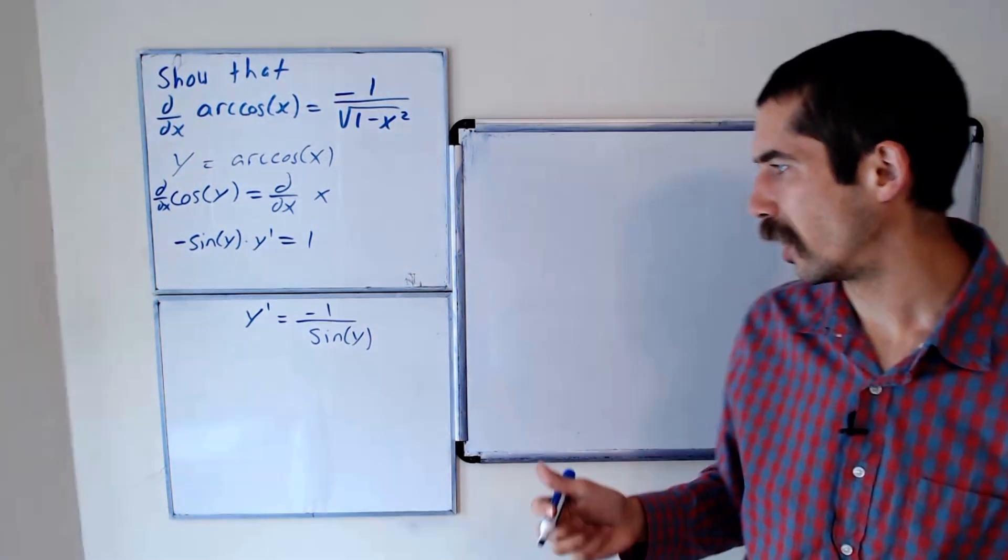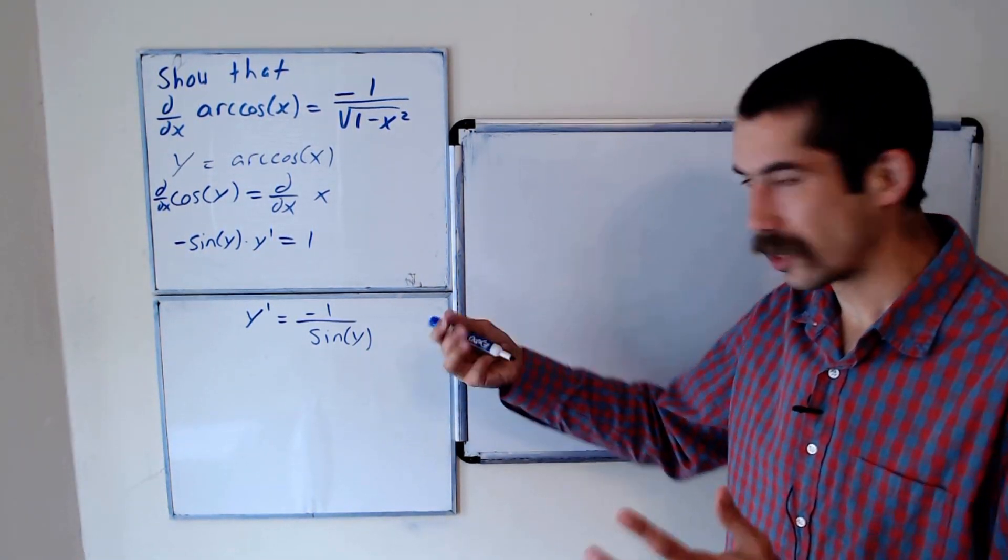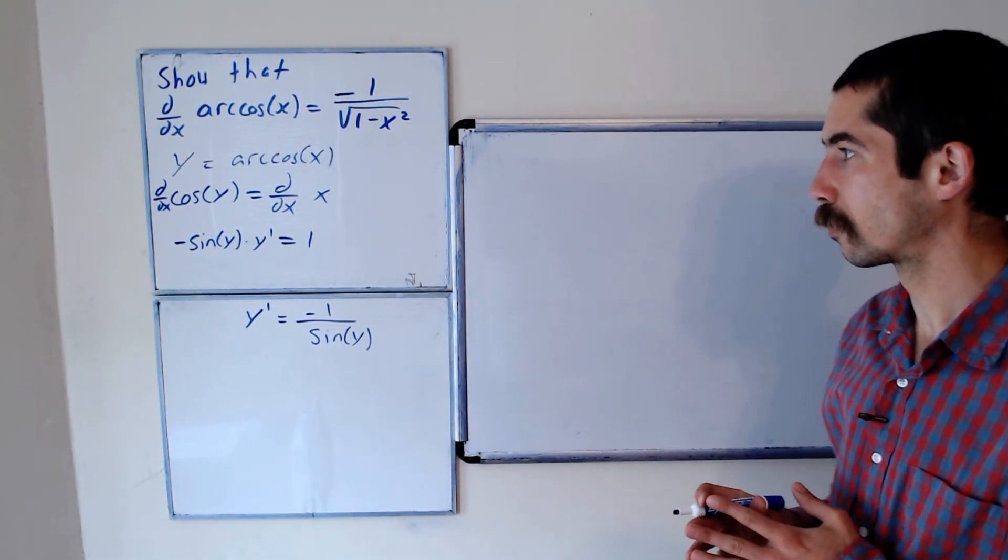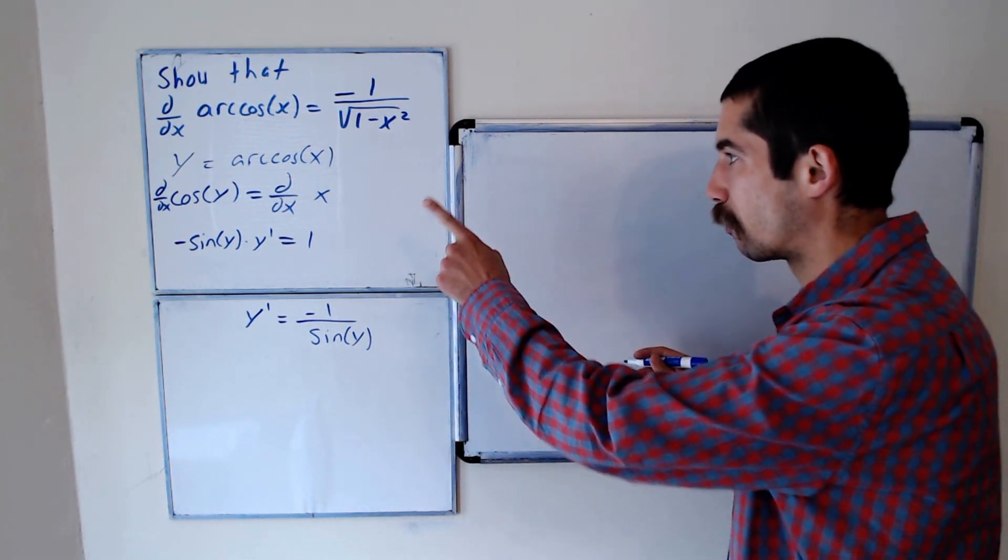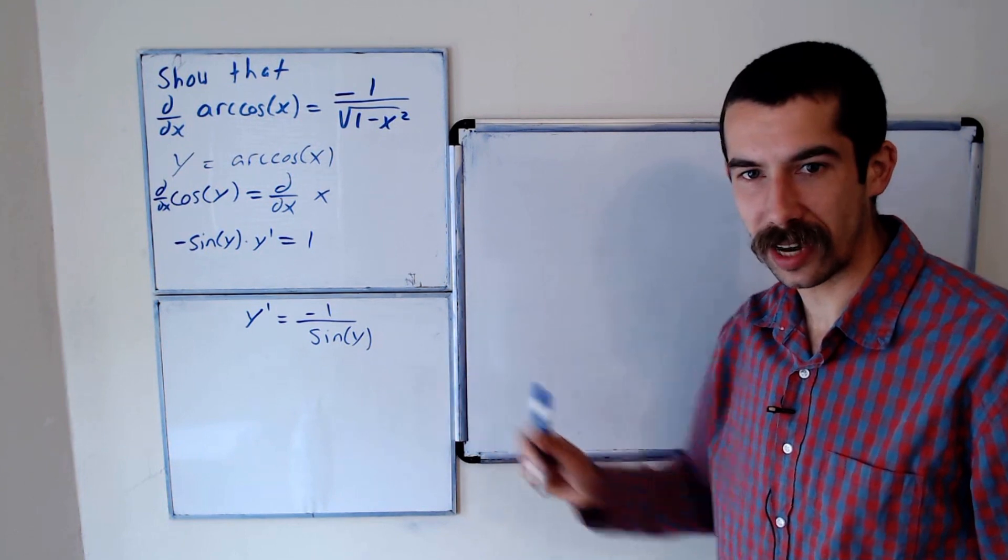But what's sine of y? We want our answer to be in terms of x. So we're going to use the fact that cosine of y equals x to help us get sine of y.